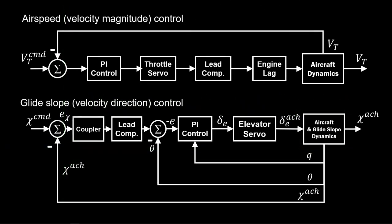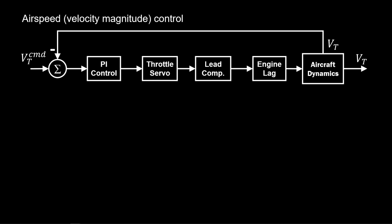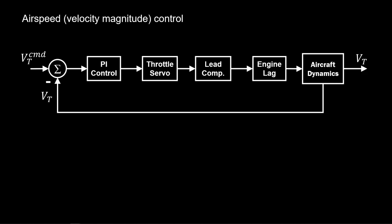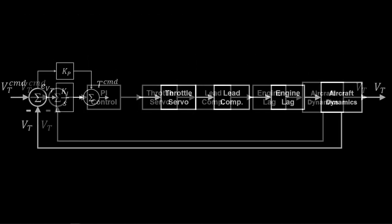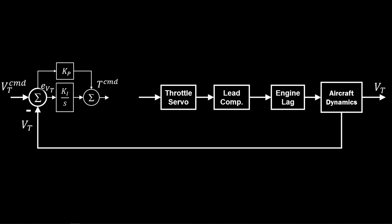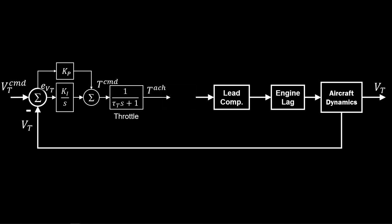Let's look at the airspeed loop. We've covered this architecture before and its tuning in section 1.6.3 — we present it here as a review and for completeness. First, the PI controller on the left operates on the airspeed error signal, producing a throttle command output. The throttle is modeled as a first-order system with time constant tau_t, producing an output of achieved throttle.